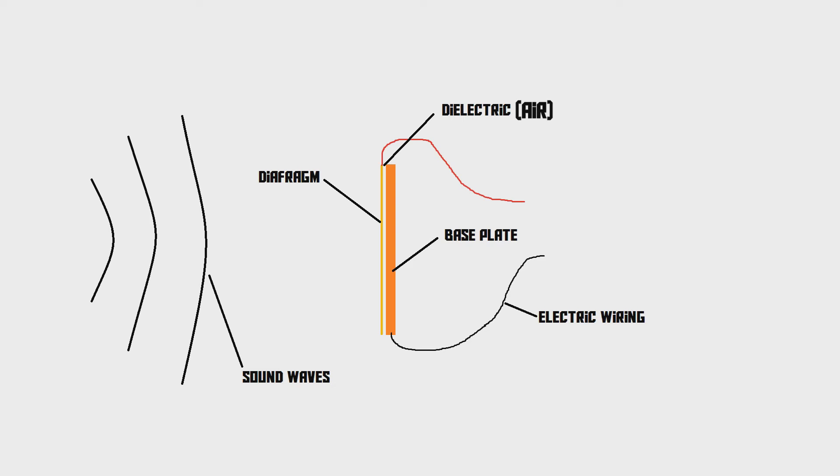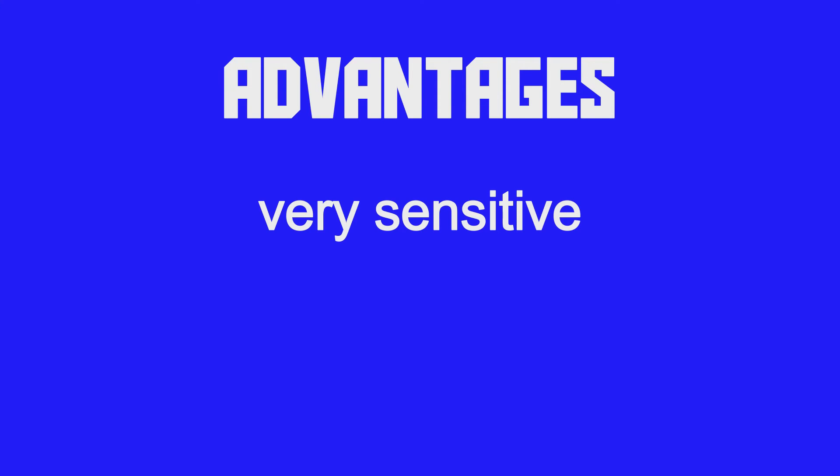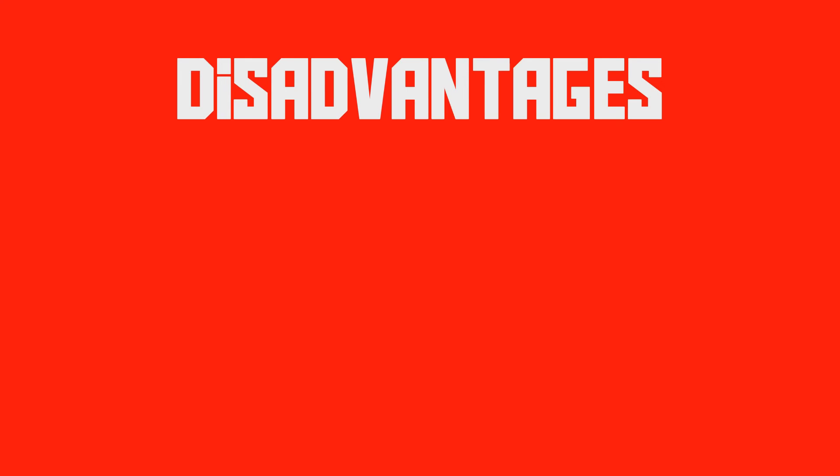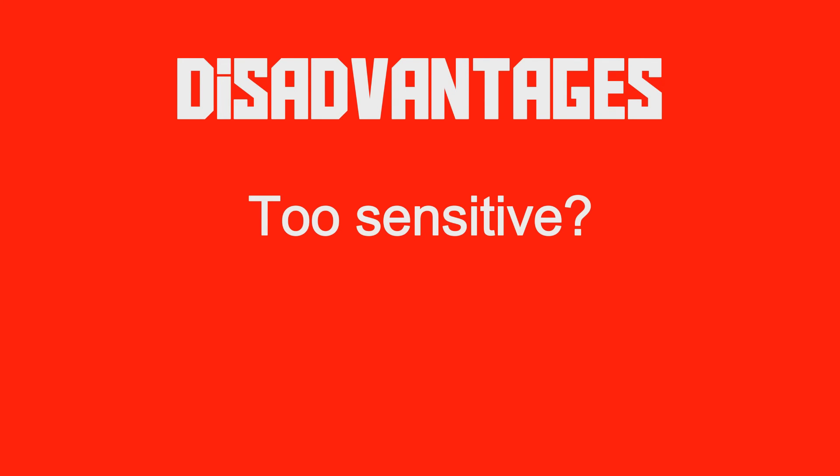That brings us to the advantages and disadvantages of the condenser mic. The advantages are that it's a very sensitive mic and it can pick up very quiet sounds, or sounds produced very far away from the microphone. The second advantage is that it picks up high frequencies with no problems — high frequency pickup is a problem on dynamic mics, but condenser microphones can pick up high frequency sounds with ease. Now, there are some disadvantages as well. First, its sensitivity means that really loud sounds can distort or even damage this microphone, because the diaphragm can vibrate so fast that it can actually touch the base plate, ruining your microphone.